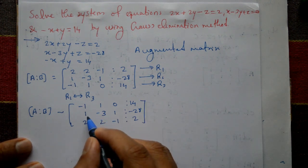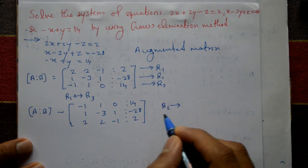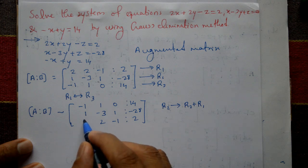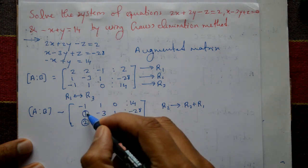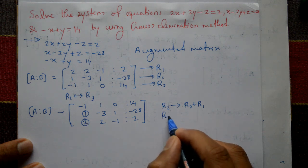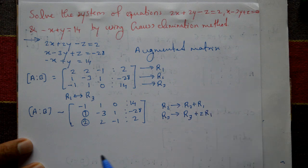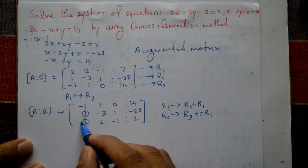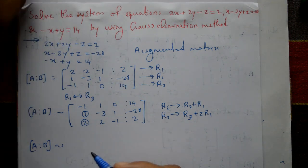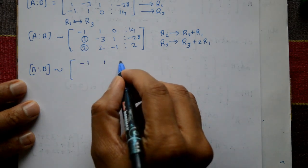Now minus 1 is the leading number. We need to make the elements below it zero. R2 equals R2 plus R1 — just add the second row and first row to make it 0. For R3, since 2 is there, R3 equals R3 plus 2 times R1 — multiply R1 by 2 and add it to the third row to get 0. The first row stays unchanged: minus 1, 1, 0, and 14.